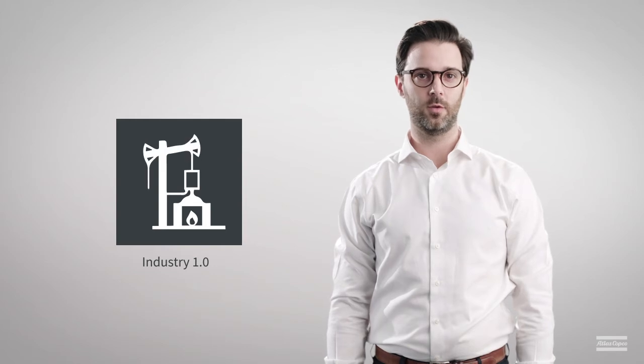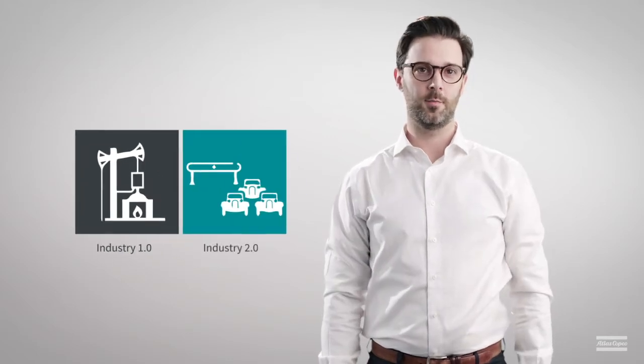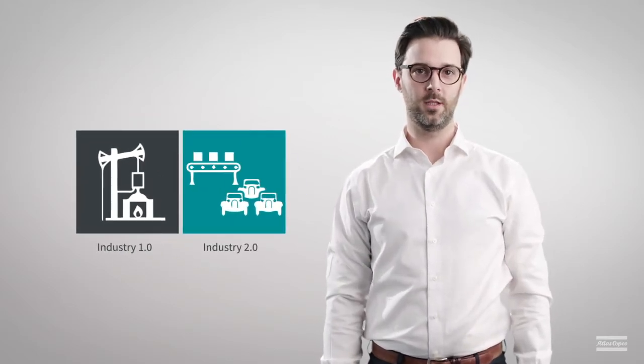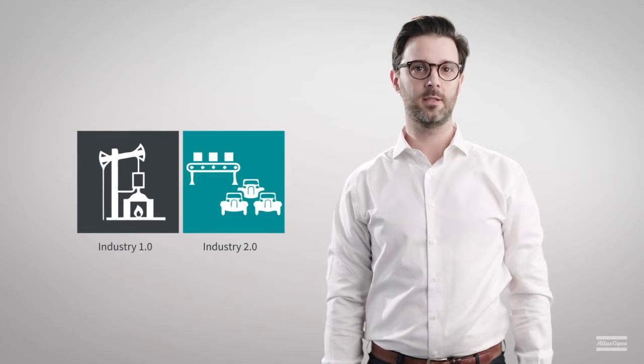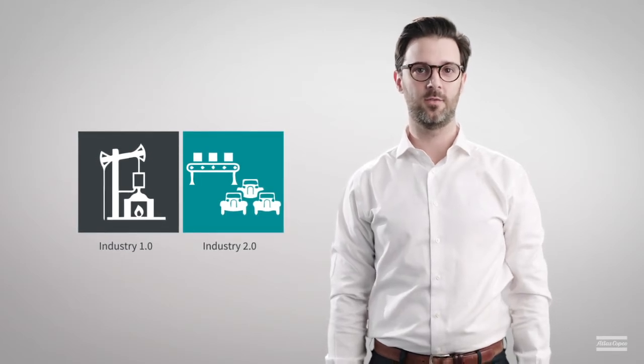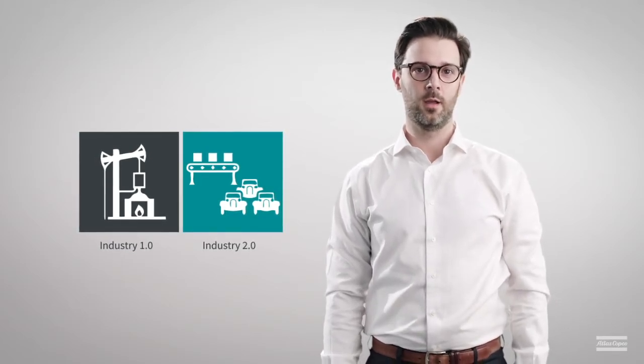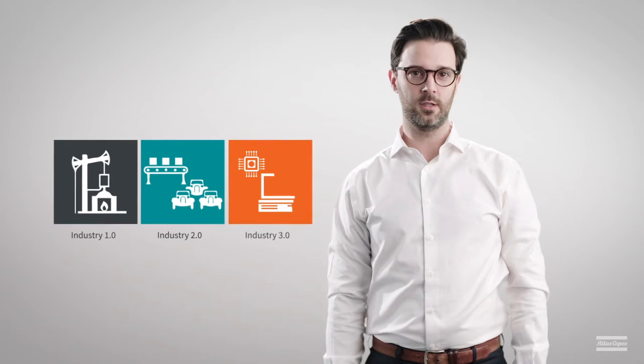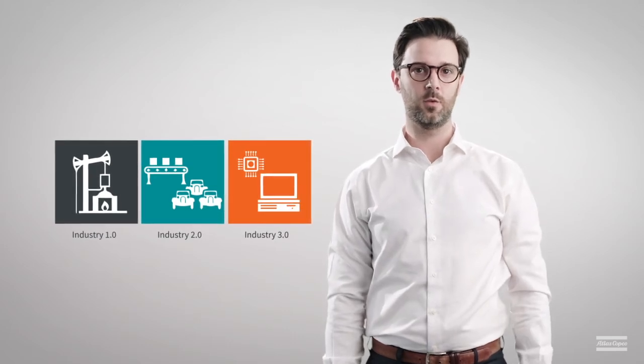The first industrial revolution was all about steam power in the late 1700s, which created a lot more efficiency and productivity. The second occurred about 100 years later, with the introduction of electricity and mass production systems to make work faster and cheaper. Along with computers came the third industrial revolution, at the end of the 20th century.